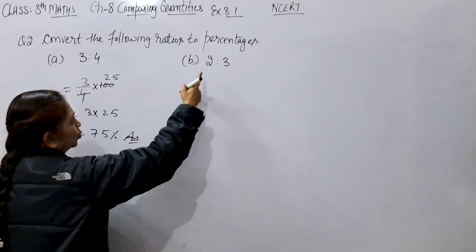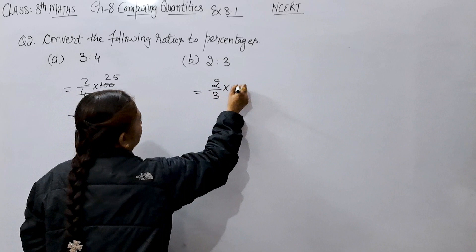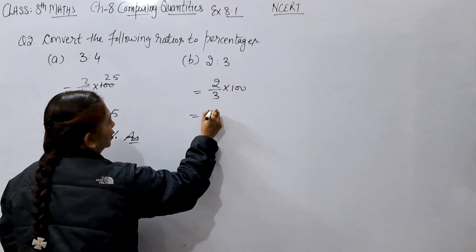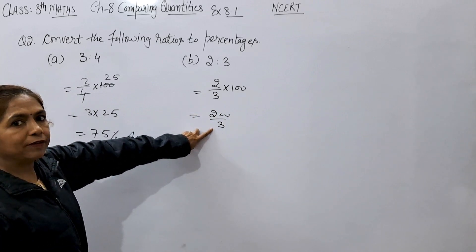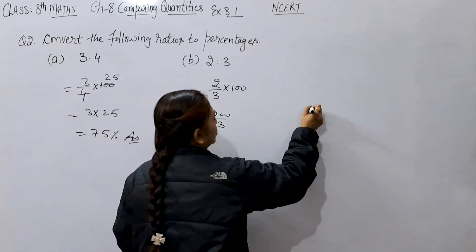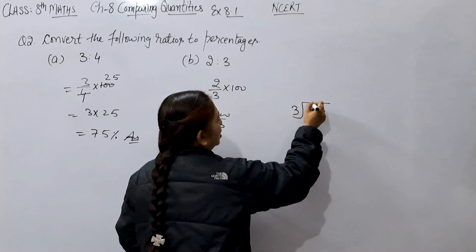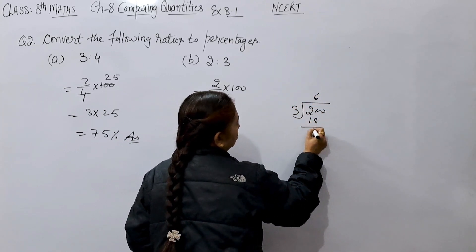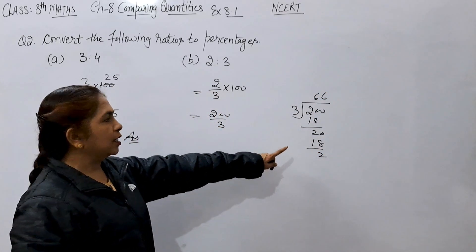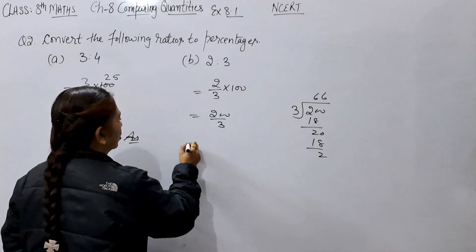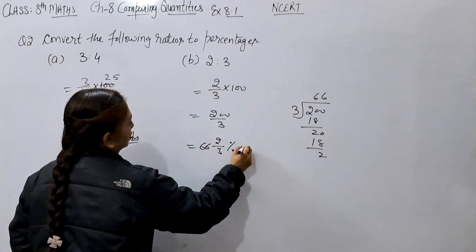Part B: 2 ratio 3 — means 2 by 3 multiply 100. So we get 200 by 3. Now 200 is not completely divisible by 3, so we divide it on the side to convert to a mixed number. 3 goes into 200 — 66 times with remainder 2. So the answer is 66 and 2/3 percent.